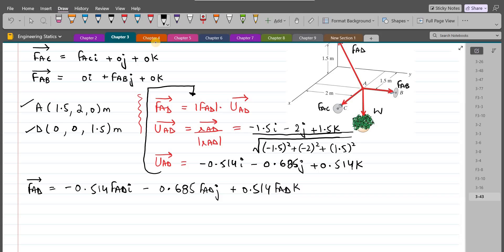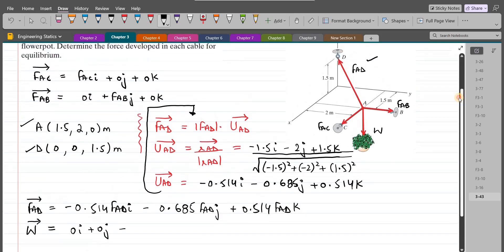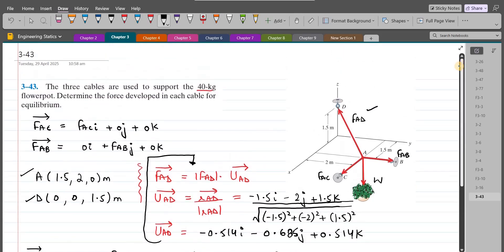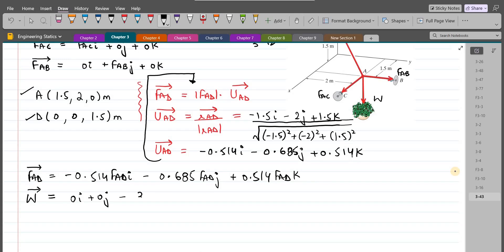Now we also have to express this weight force in terms of Cartesian vector form. So for the weight force, because the weight is only acting in the negative z-axis, we have 0I plus 0J minus 40 into 9.81, so 392.4N, negative 392.4K.